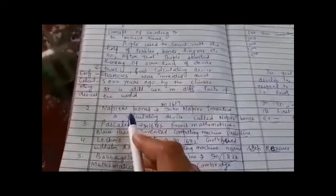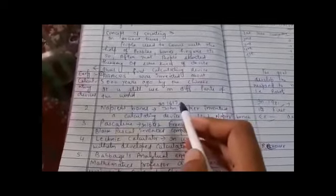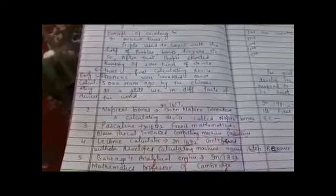Second is Napier's bones. In 1617, Johann Napier invented a calculating device called Napier's bones.